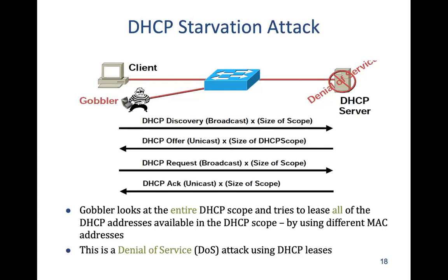The Gobbler keeps changing his machine's MAC address to get a new offer each time, and does this so many times that the whole DHCP scope is exhausted. It means he has grabbed all possible IP addresses that the DHCP server had to offer, along with all other parameters. This is the DHCP starvation attack — the DHCP scope is completely used up by the attacker using spoofed MAC addresses.